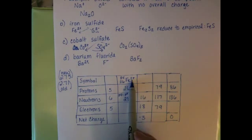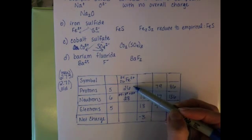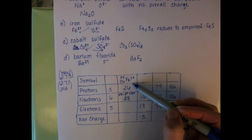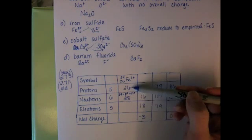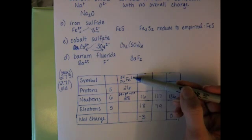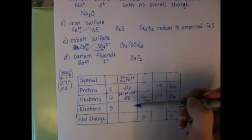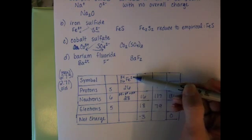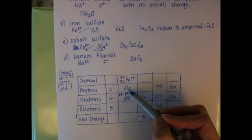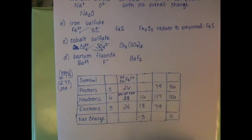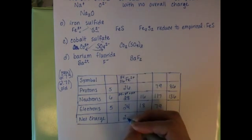Because this ion has a 2 plus charge, that means that the number of positively charged particles, the protons, is greater than the number of negatively charged particles, the electrons. If the number of protons and electrons were the same, there would be no charge. When the protons outnumber the electrons, there's a positive charge. And when the electrons outnumber the protons, there's a negative charge. Because we have a 2 plus charge, that tells us we have 2 more protons than electrons, giving us 24 electrons. The net charge, which is already given to us up here, is a 2 plus.